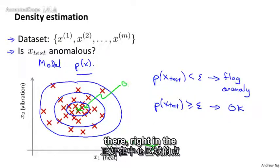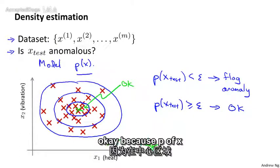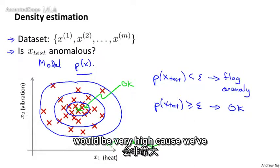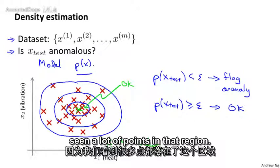Whereas the point that's way in there, right in the middle, this would be okay because P of X right in the middle of that would be very high because we've seen a lot of points in that region.